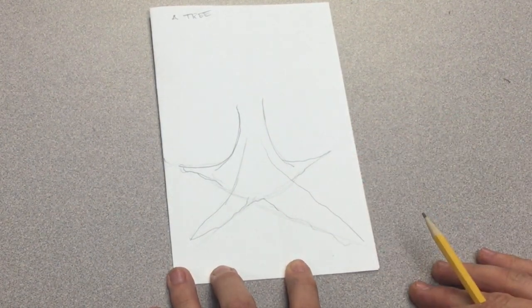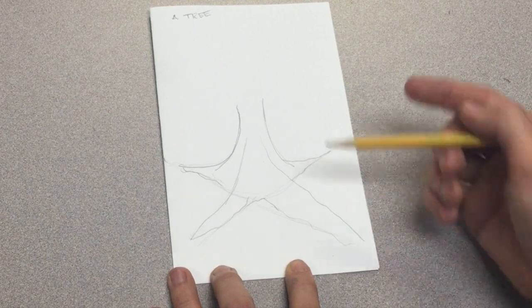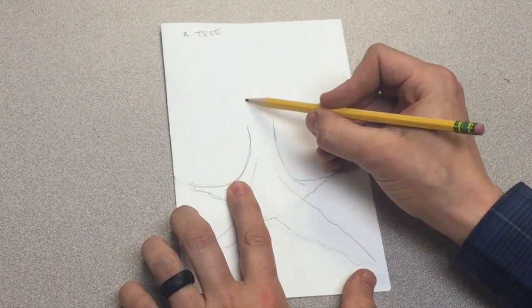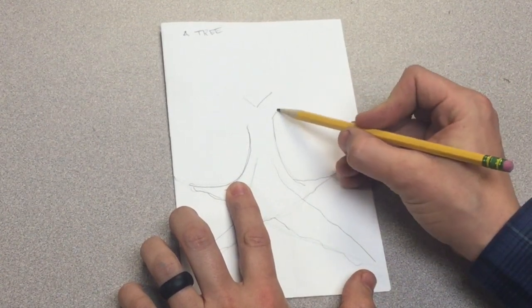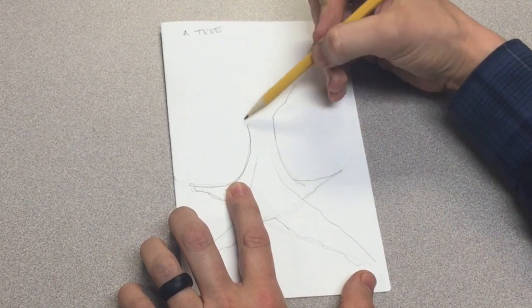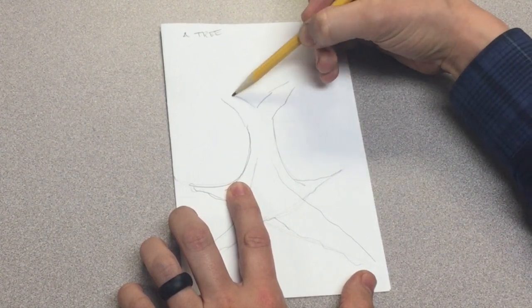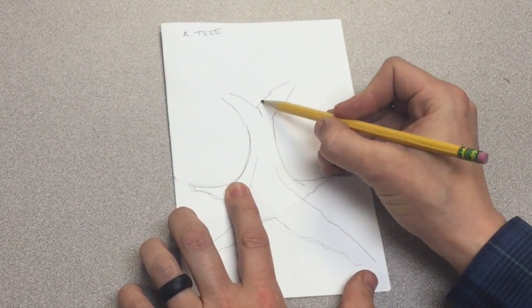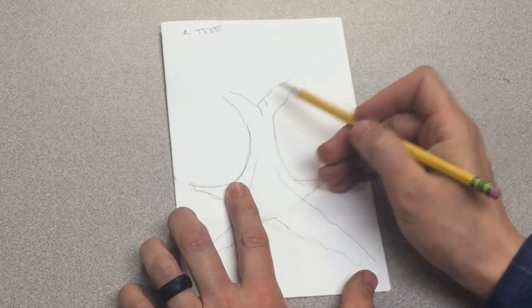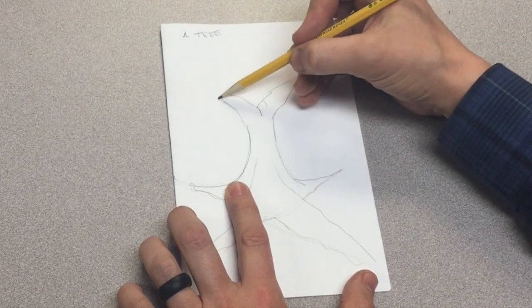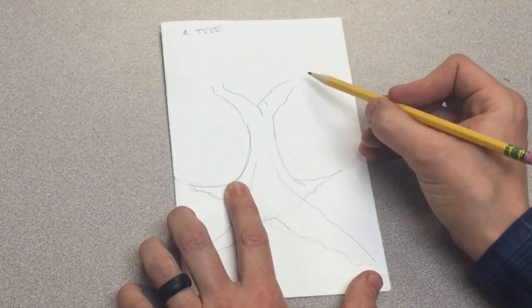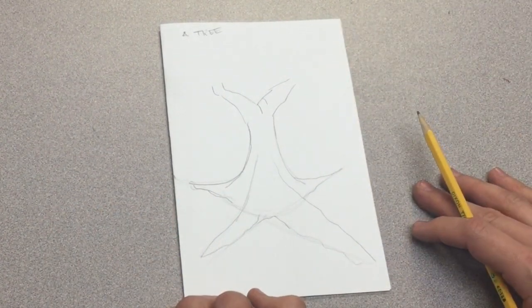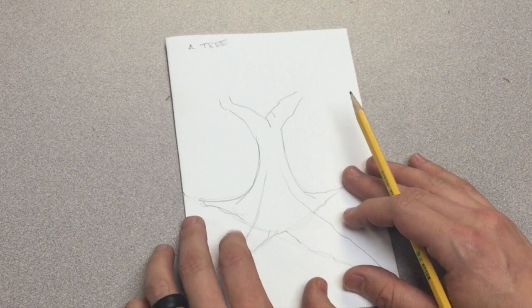Now that I've got my roots in place, we need to add some branches at the top. I like to make a V and then let these smaller parts to my tree, these branches, these limbs branch off. Maybe some contour lines that show the shape of that branch. This can bend a little bit. Tree branches are always very varied. They all are very different, one from another.